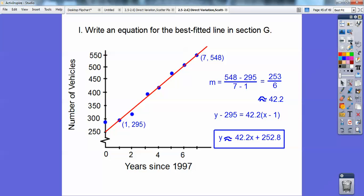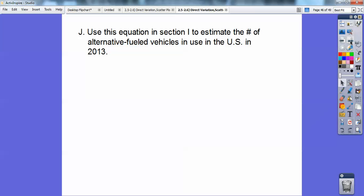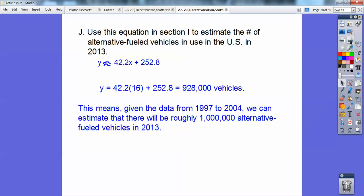And then now we're going to use that equation to estimate the number of alternative fuel vehicles in use in the United States in 2013. So how many years in 2013 is past 1997? I got 16 years right there. So we plugged in 16 and you get 928. Well, 928 what? Remember it's in thousands. So 928,000.